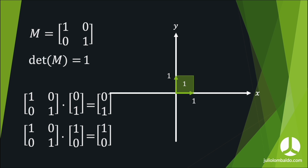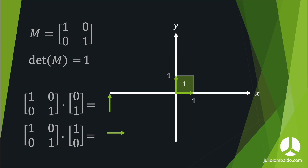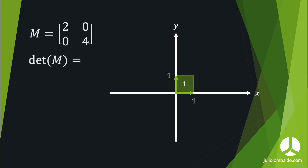Let's take another case to understand this better. Consider a different 2×2 matrix: [2, 0; 0, 4]. The columns are (2, 0) and (0, 4). The determinant of this matrix is two times four minus zero times zero, which equals eight.